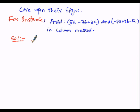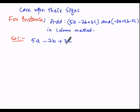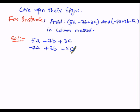Here the first expression is 5a minus 7b plus 3c. The first term is 5a, second term is 7b, and third term is 3c, separated by minus and plus symbols. Now arranging the second expression row-wise such that like terms fall column-wise: minus 7a plus 3b minus 5c. Then we add up all these like terms.